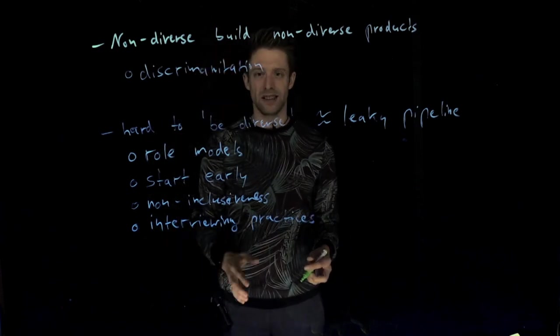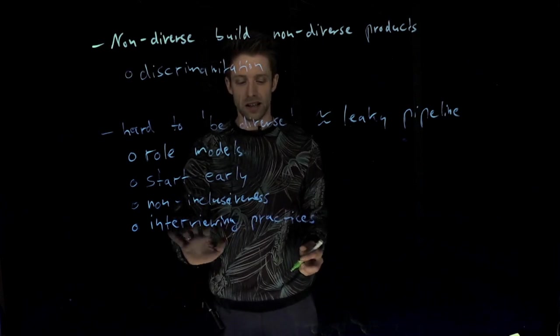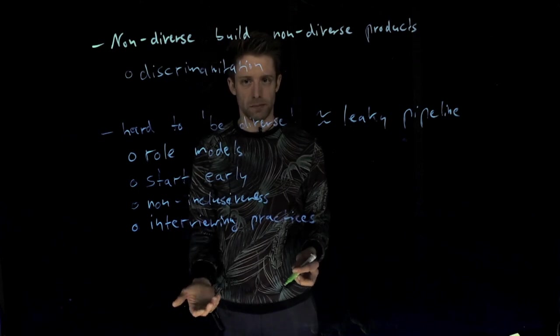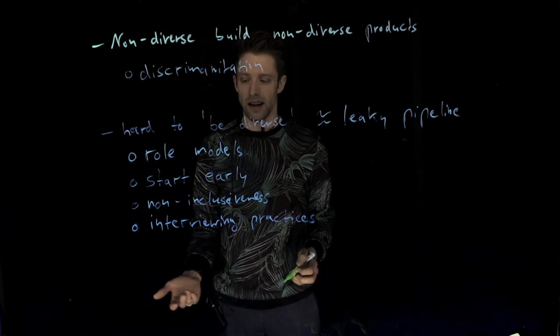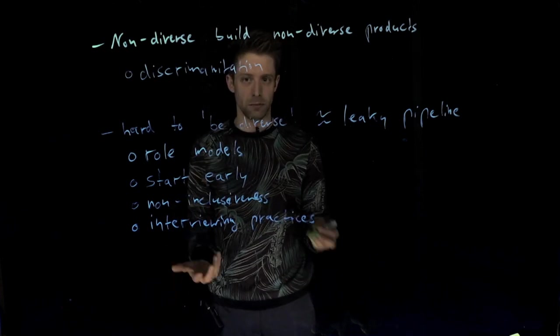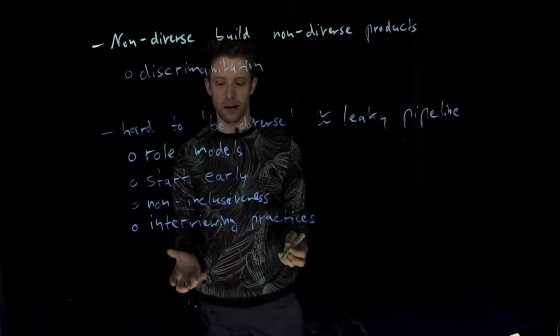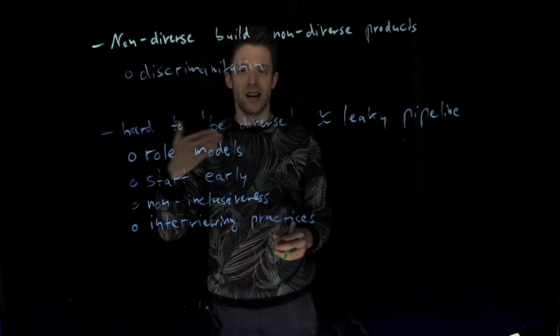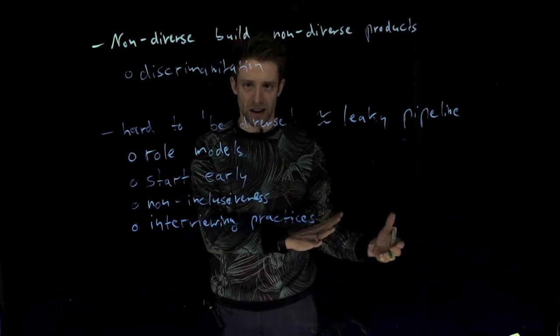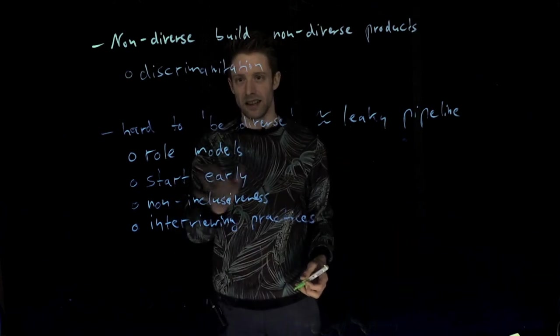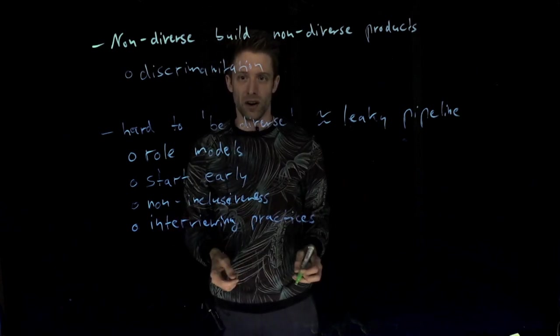Another issue is, for example, if we talk about neurodiverse people, that interviews can be extremely stressful situations for them and you can make certain accommodations. There are, for example, guidelines for autism spectrum, how to make these things a bit more pleasant for them, that in a way they don't get an advantage, but they get at least to the same level as someone who does not have these issues. So it's about equity, it's about making accommodations, it's not favoring anyone over someone else.